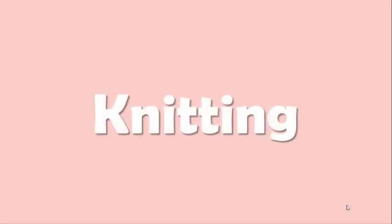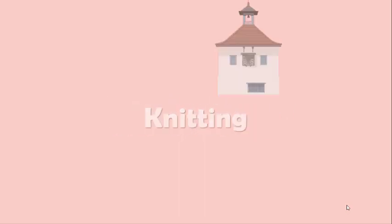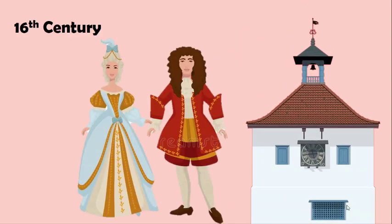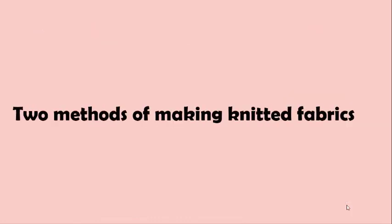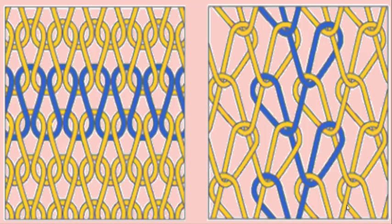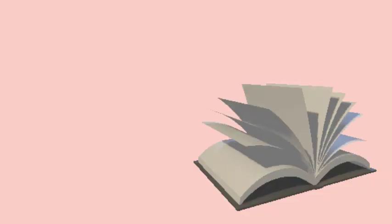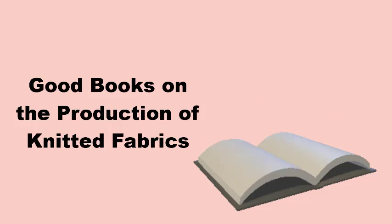After that, we have knitting. Knitting came into being in the 16th century. There are two methods of making knitted fabrics. We shall describe them briefly, as there are many good books written on the production of knitted fabrics. For our purpose, we shall classify them as follows.